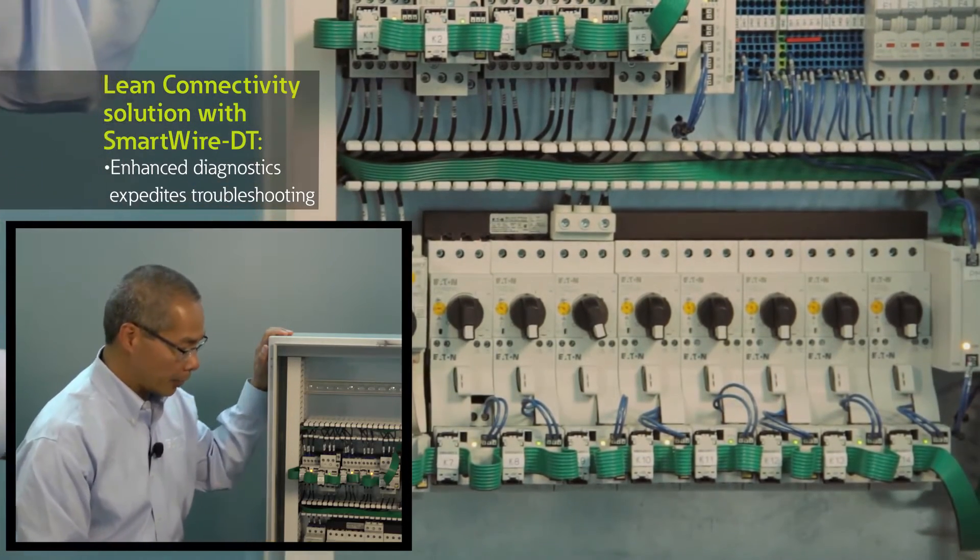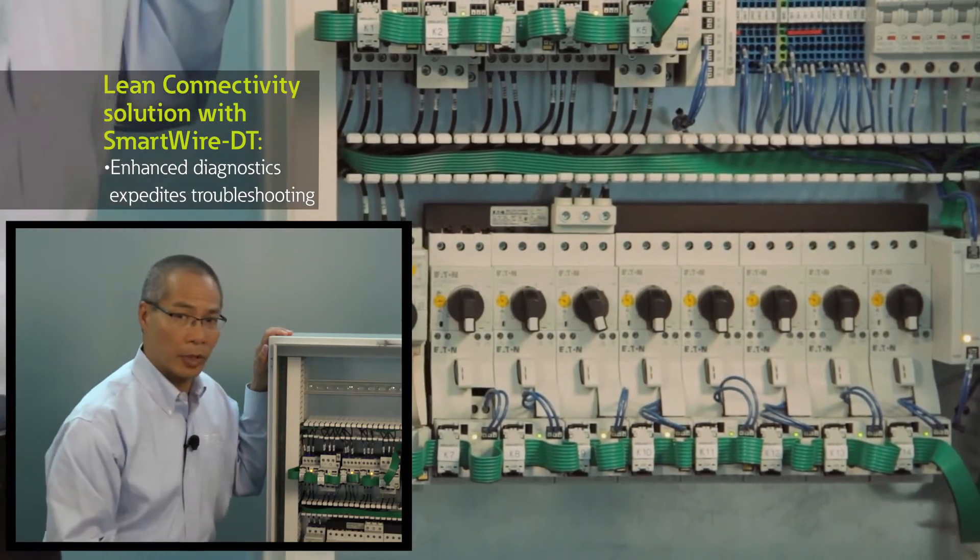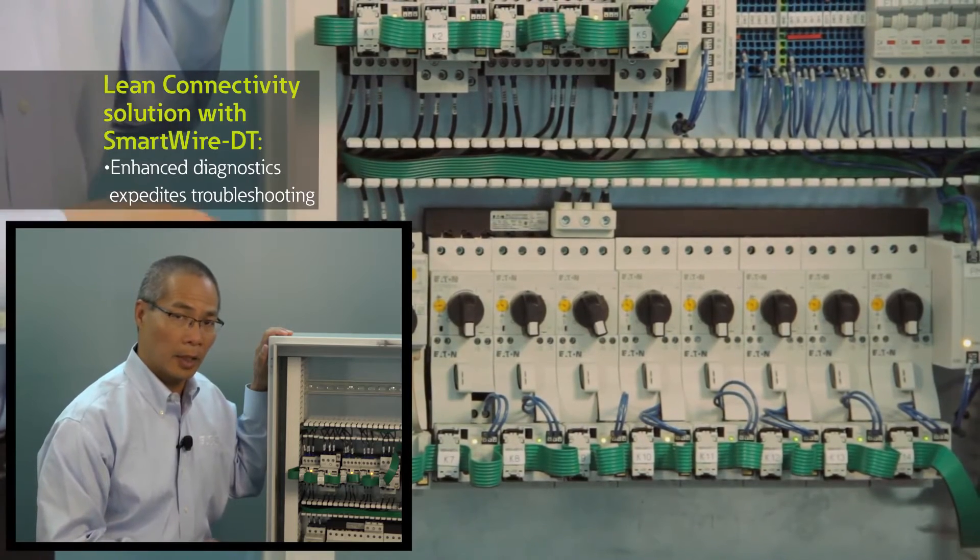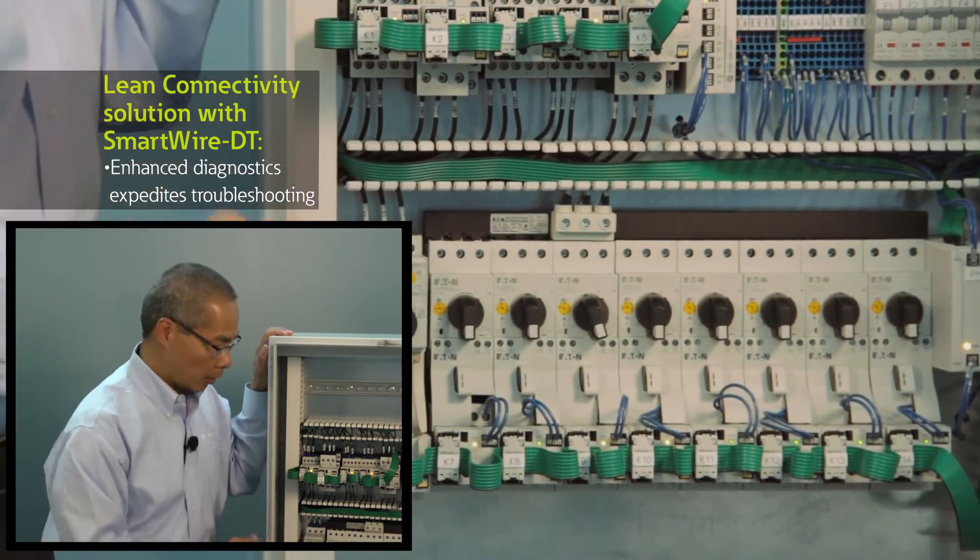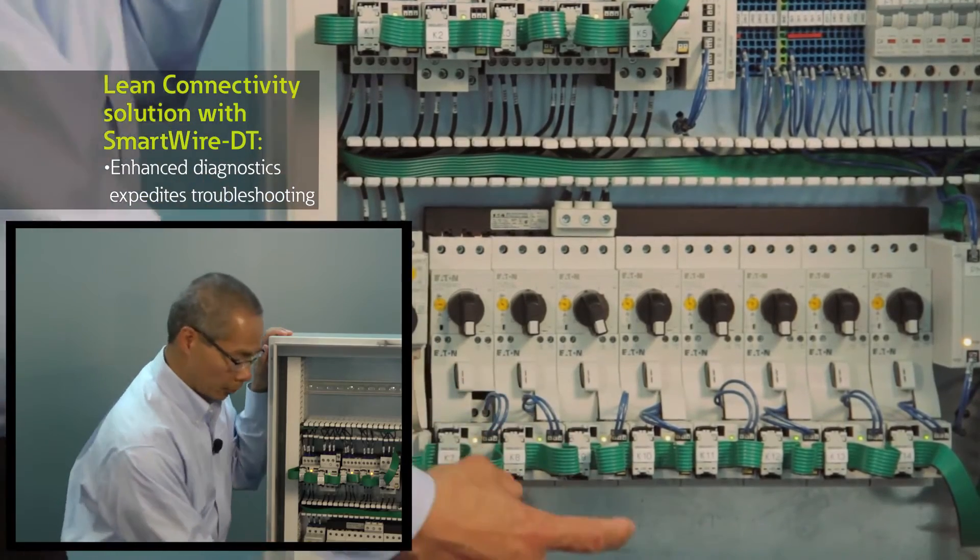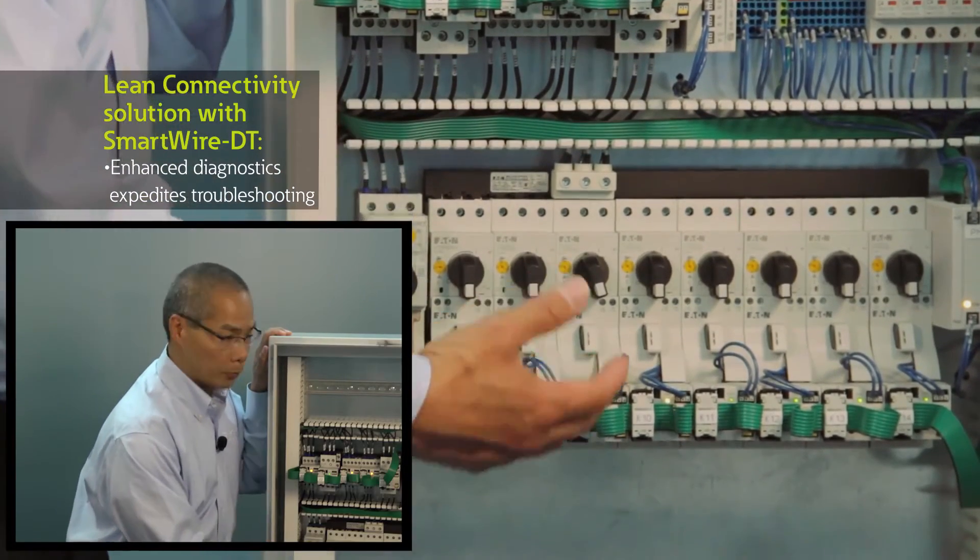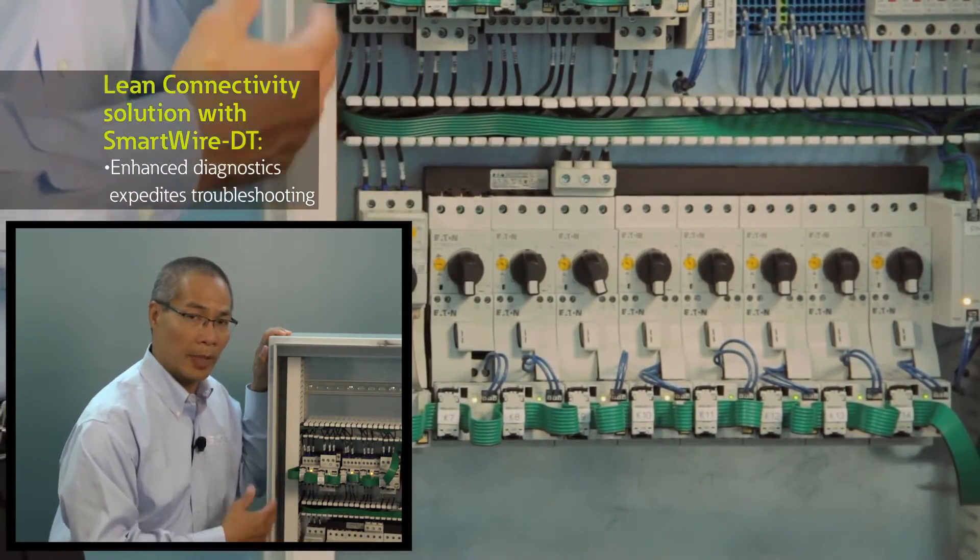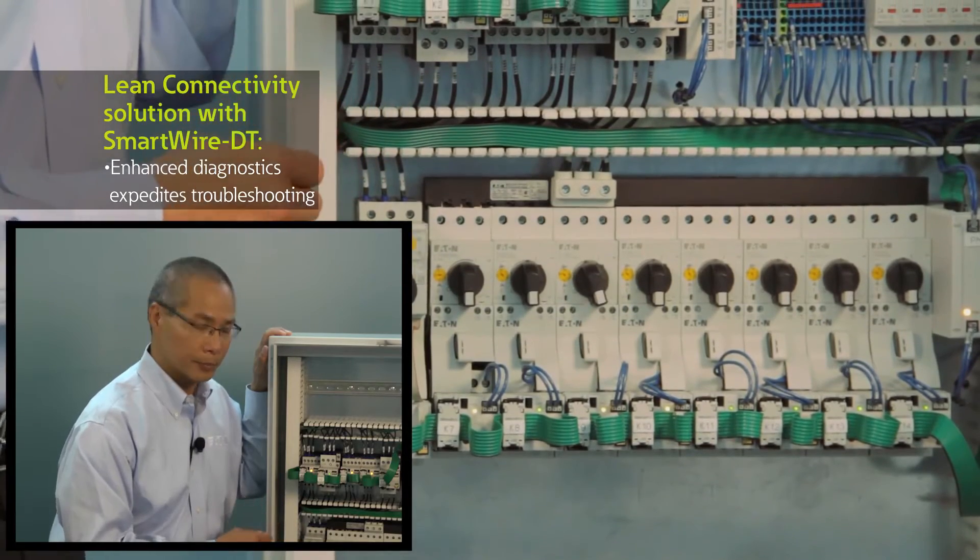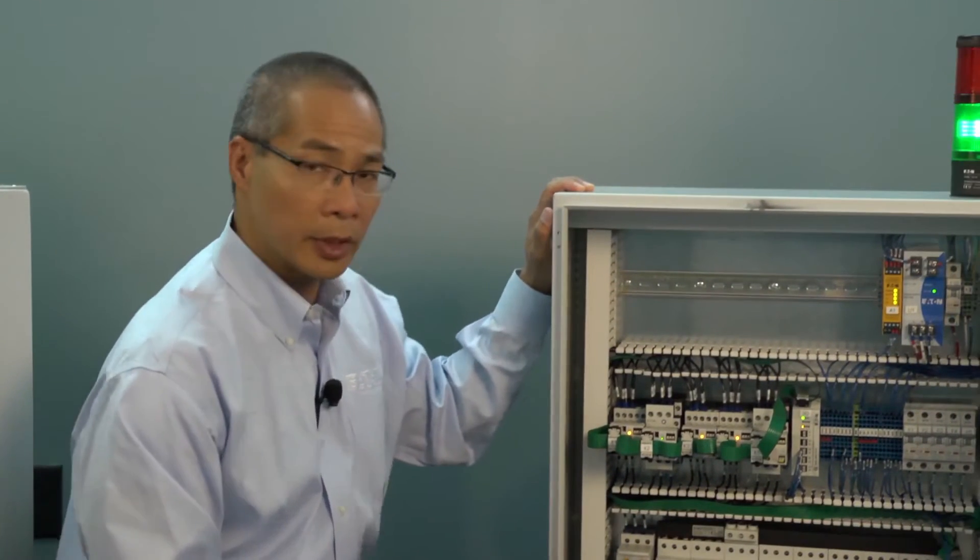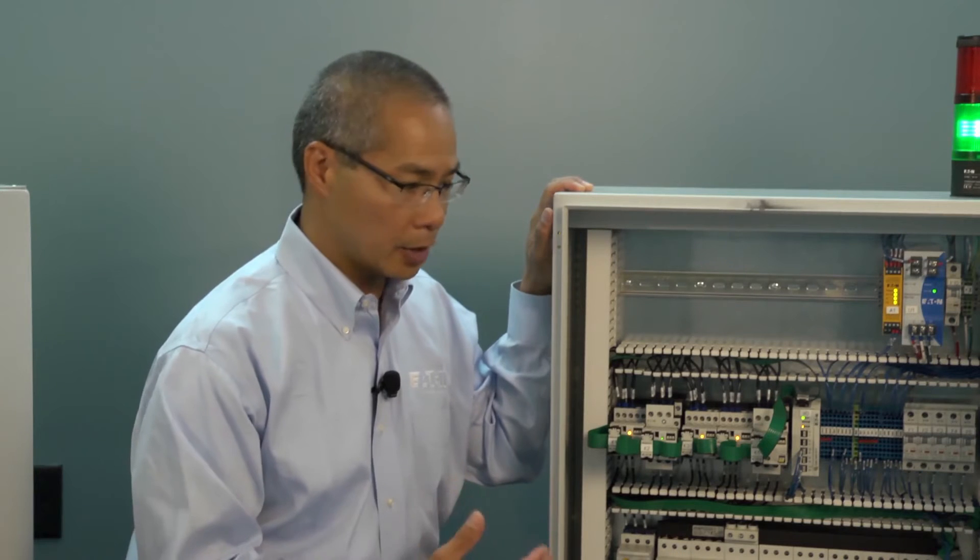If you wanted to compare that with a conventionally wired device, if you wanted to look at the motor load of a standard device, typically you would have to add some sort of current sensor and then wire it back to some analog inputs on the PLC. So this solution can save you time and expense in doing that current monitoring.